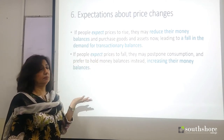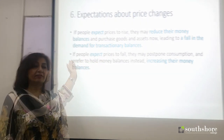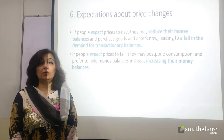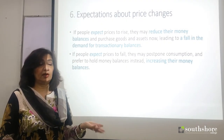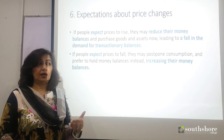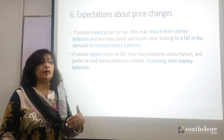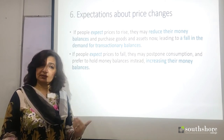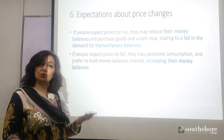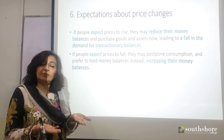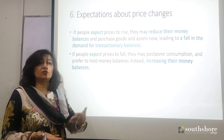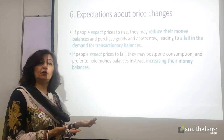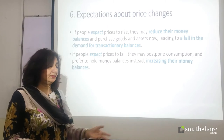The effect works in the opposite direction for an expected fall in prices. If prices are expected to go down, people will wait — they will not buy the asset today, but will hold money and wait for the price to fall. So if you expect prices to go down, demand for money balances will be higher. If you expect prices to go up, demand for money balances will be lower, as people prefer to buy the asset instead.